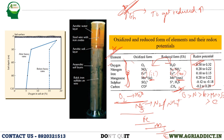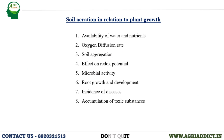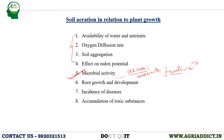Other properties influenced by soil aeration include microbial activity: aerobic microbes need oxygen to survive, anaerobic microbes do not, and facultative aerobes/anaerobes can switch between aerobic and anaerobic metabolism depending on oxygen availability. Next is root growth and development: aeration requirements differ among plants. Legumes are more sensitive to poor aeration compared to grasses, which are generally more tolerant.